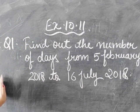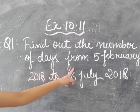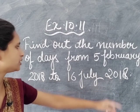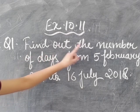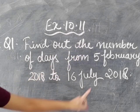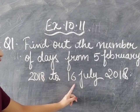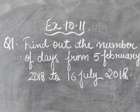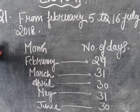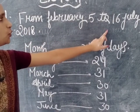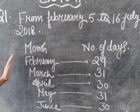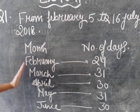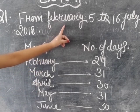The first question is: find out the number of days from 5 February 2018 to 16 July 2018. What we have to find here? Number of days from 5 February to 16 July of the same year, 2018. First, you have to write from February 5 to 16 July 2018. Then you have to make two columns of month and number of days.